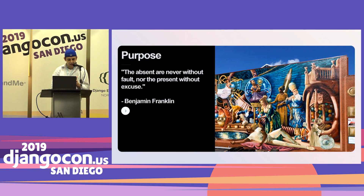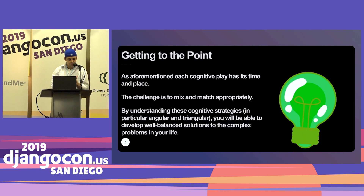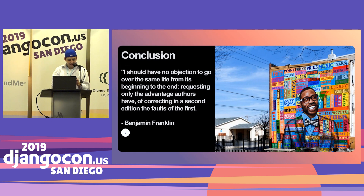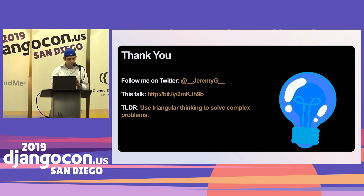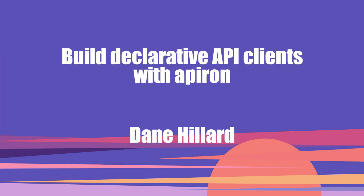Triangular thinking is thinking in color — useful for structuring complex problems spanning strategy, technology, and organization. An example is Jack and Jill: there are only three archetypal ways they can constructively interact. One: each do their own thing with minimal contact — autonomy, like baseball. Two: settle on a boss-subordinate arrangement — control, like football. Three: collaborate as peers — cooperate, like basketball. The importance of grasping these patterns of thinking has become increasingly critical. This approach allows you to decode complexity by isolating form. The challenge is to mix and match appropriately. Understanding these cognitive strategies will help you develop well-balanced solutions to the complex problems in your life.